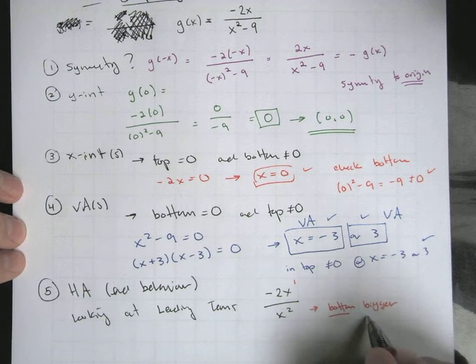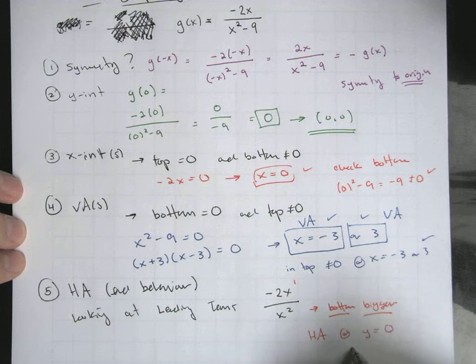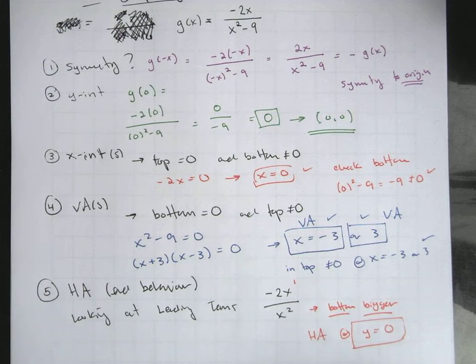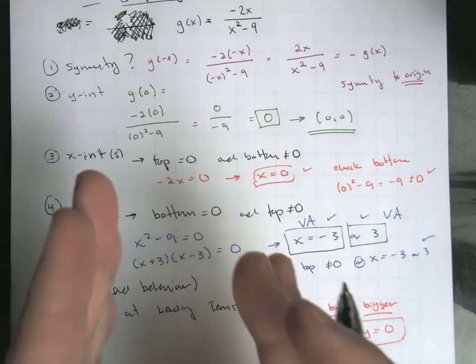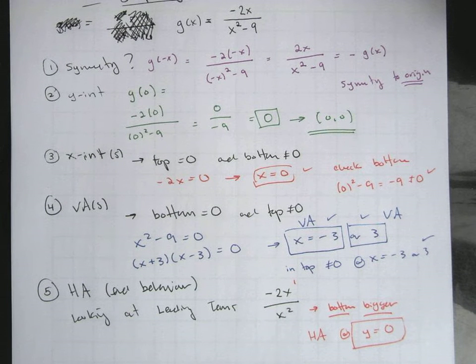If the bottom power is bigger, that means we get a horizontal asymptote, and it's going to be at y equals zero. So that's actually the line that lines up with our x-axis. So the x-axis itself, as we get further out to the edges of our graph, is going to be a horizontal asymptote for us.